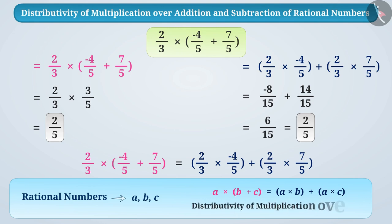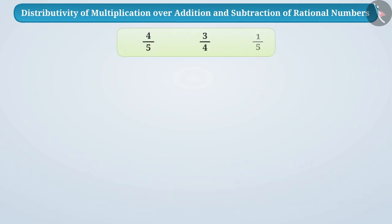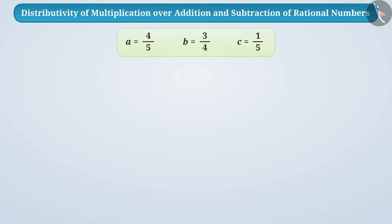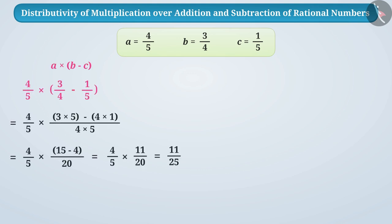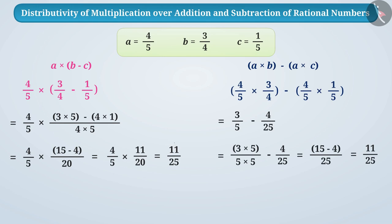This is called distributivity of multiplication over addition. Now pause this video, take your notebook and pen, and take three rational numbers. Suppose the first rational number is a, second is b, and third is c. Now find the result by placing the values in a multiplied by (b minus c) and also in a multiplied by b minus a multiplied by c. Did you get the same result in both cases?